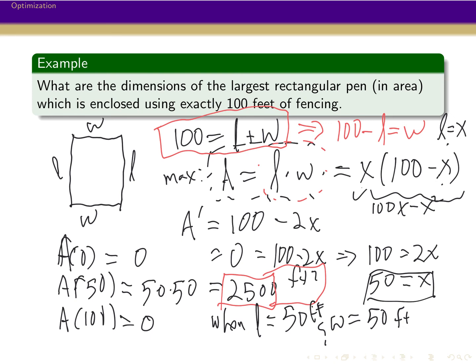Notice what the rectangle that maximizes area is: the length and width are the same, so the answer is a square — 50 by 50. That's not too much of a surprise; often the maximized rectangles in these problems turn out to be squares. That's just something to note.